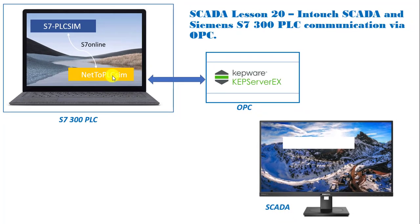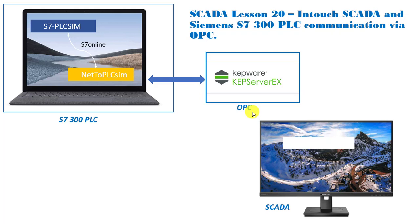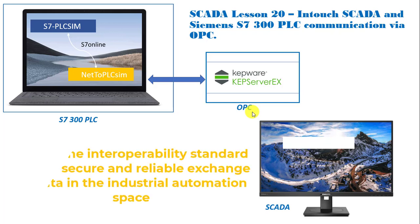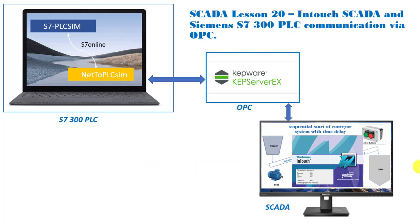We'll also need another software because we'll be using OPC for data collection and data exchange between the S7 PLC and the IntraScada. We will be needing the Capware software — that's the OPC software. And then from there we already have our IntraScada software installed. So we can go ahead and see how we can download these two software and then look at the configuration.